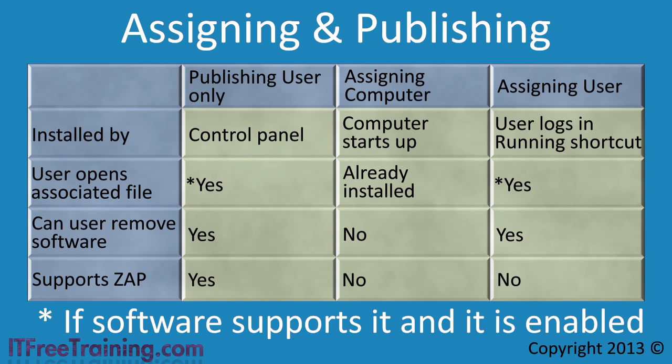The next way that software can be installed is via a shortcut, usually found in the start menu or the desktop. When the user launches the shortcut, the application will automatically be installed. Assigned software can also be installed automatically when a document for that application is opened — for example, Microsoft Office could be installed automatically when the user attempts to open a Microsoft Word document. If the user decides they do not want the software, they can uninstall it. Just remember, if you configure the option to install on login, the software will be installed next time the user logs in.